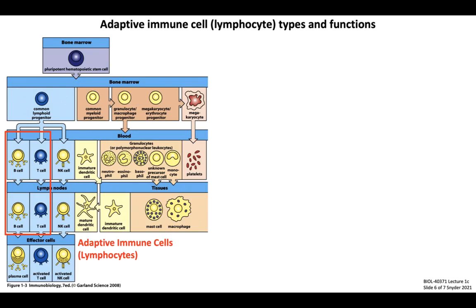For the last section of this lecture, we'll introduce the cell types responsible for mediating adaptive immunity. Revisiting our differentiation figure, the common lymphoid progenitor gives rise to both B and T lymphocytes, which are the key cell types of the adaptive immune system. Although there aren't as many different types of adaptive immune cells, B and T cells can display a lot of heterogeneity depending on their activation status. Immunologists address this heterogeneity by defining subsets of B cells or T cells, which we'll discuss later in lectures covering adaptive immunity.